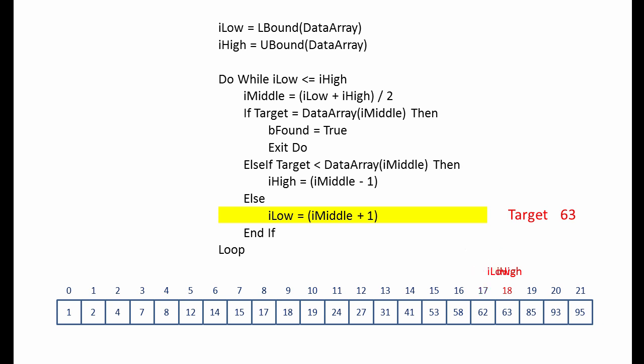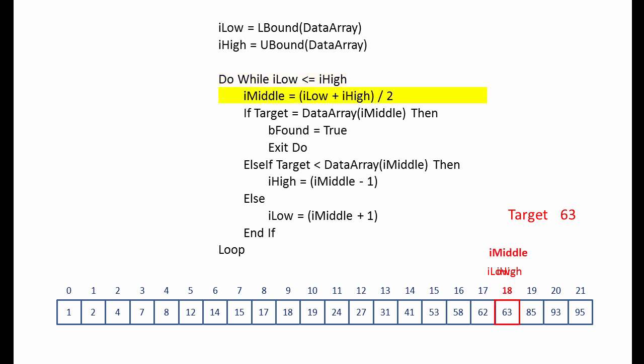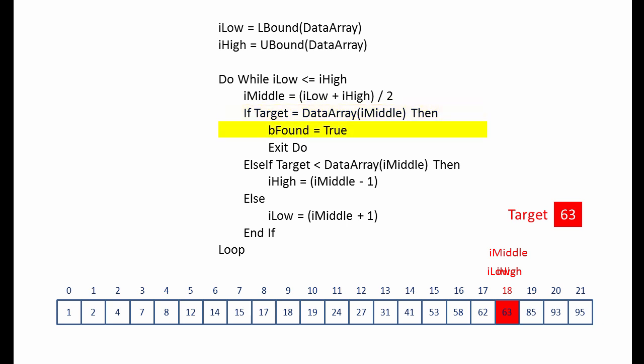So we redefine the low pointer. Notice how the low pointer and the high pointer now have the same value. To the top of the loop — we haven't met the exit condition just yet. We calculate the middle. This time the middle is the same as the low and the high. We ask: is it the target? And this time the answer is yes. So we set a flag to true, exit the loop, and the algorithm is complete. We can now perform an output depending on the value of that Boolean variable.